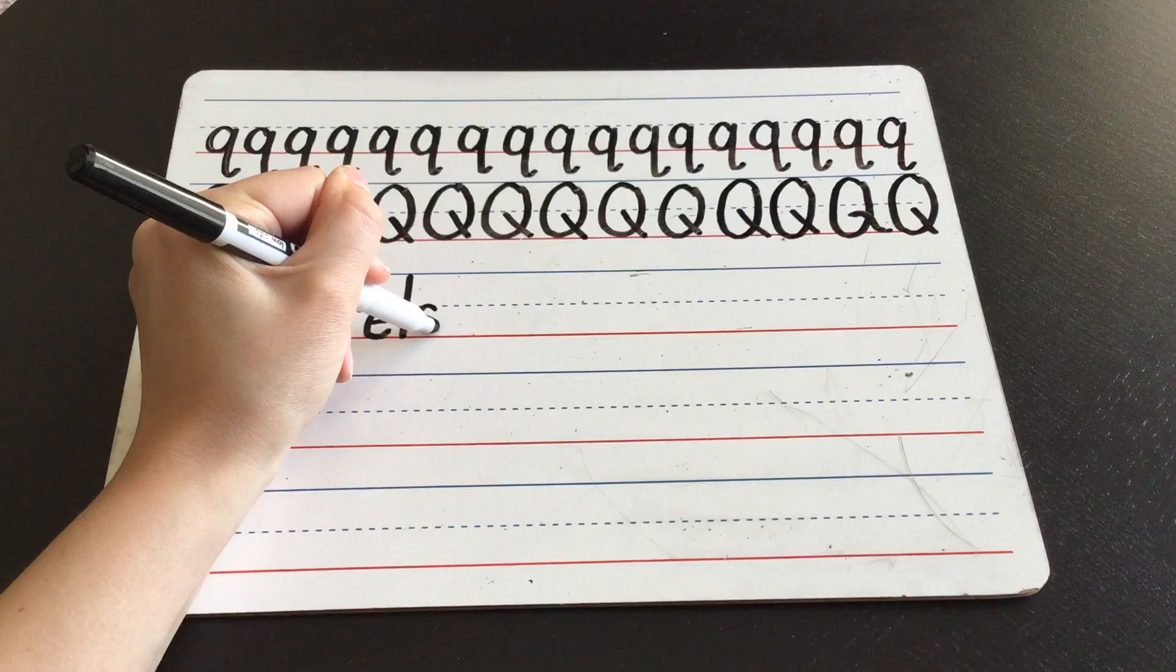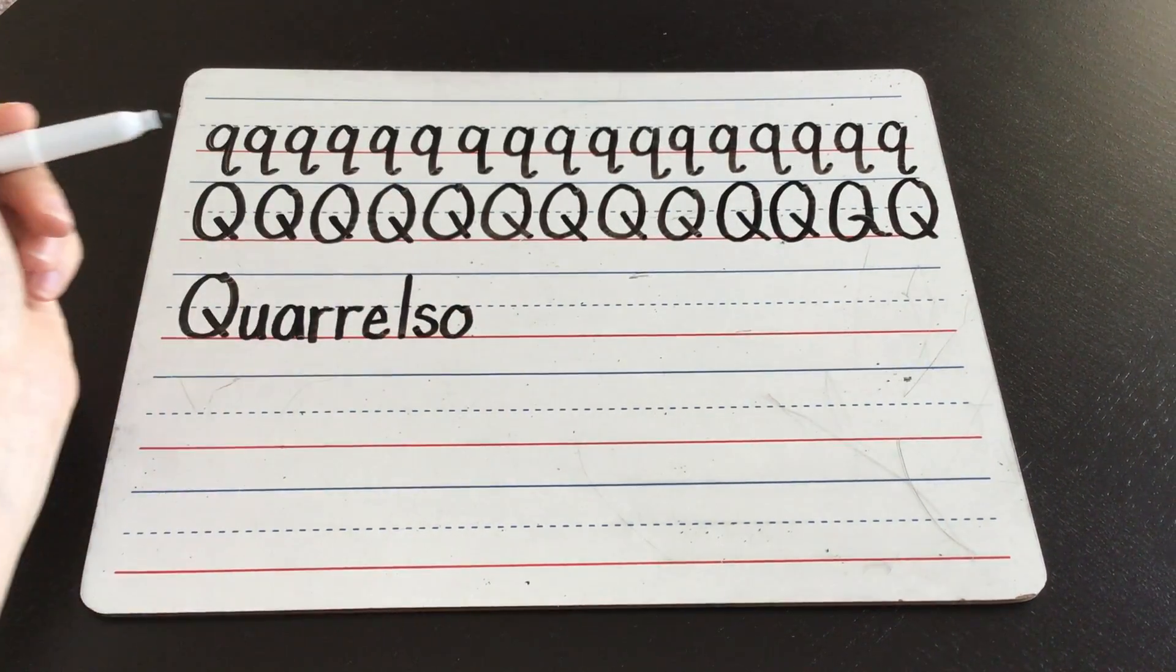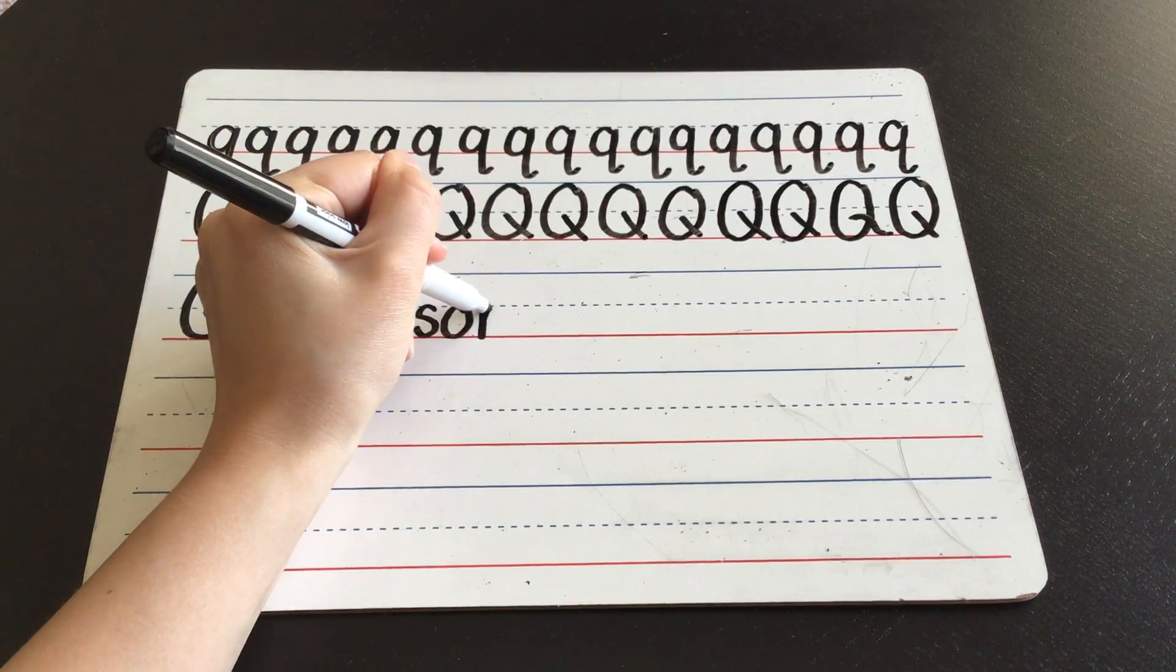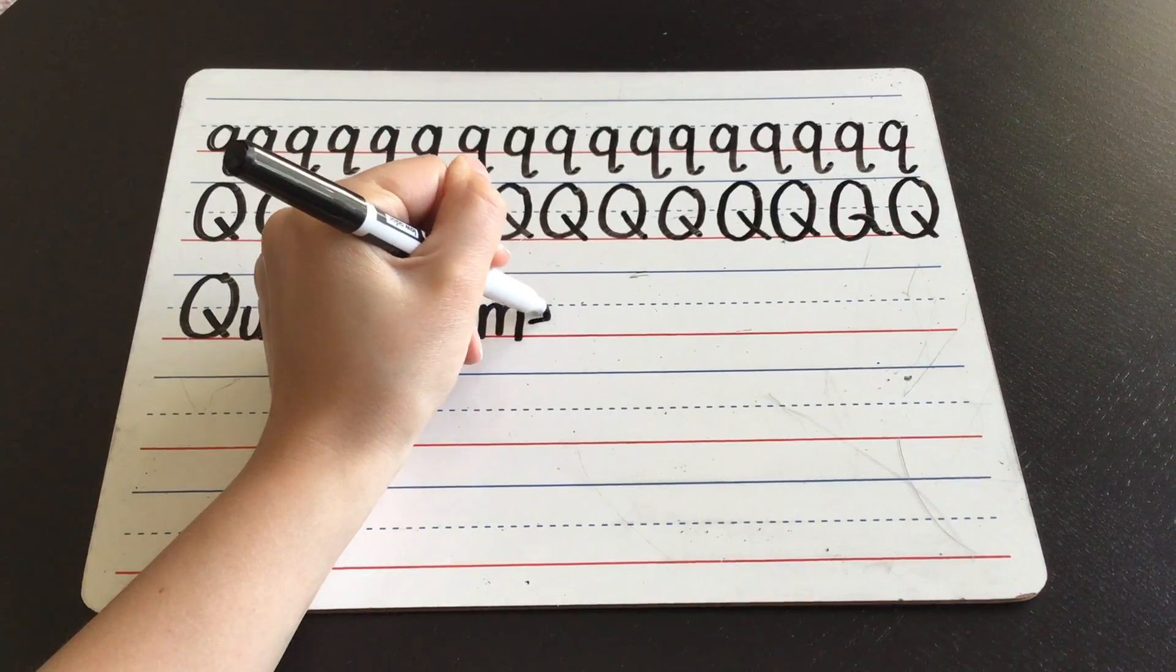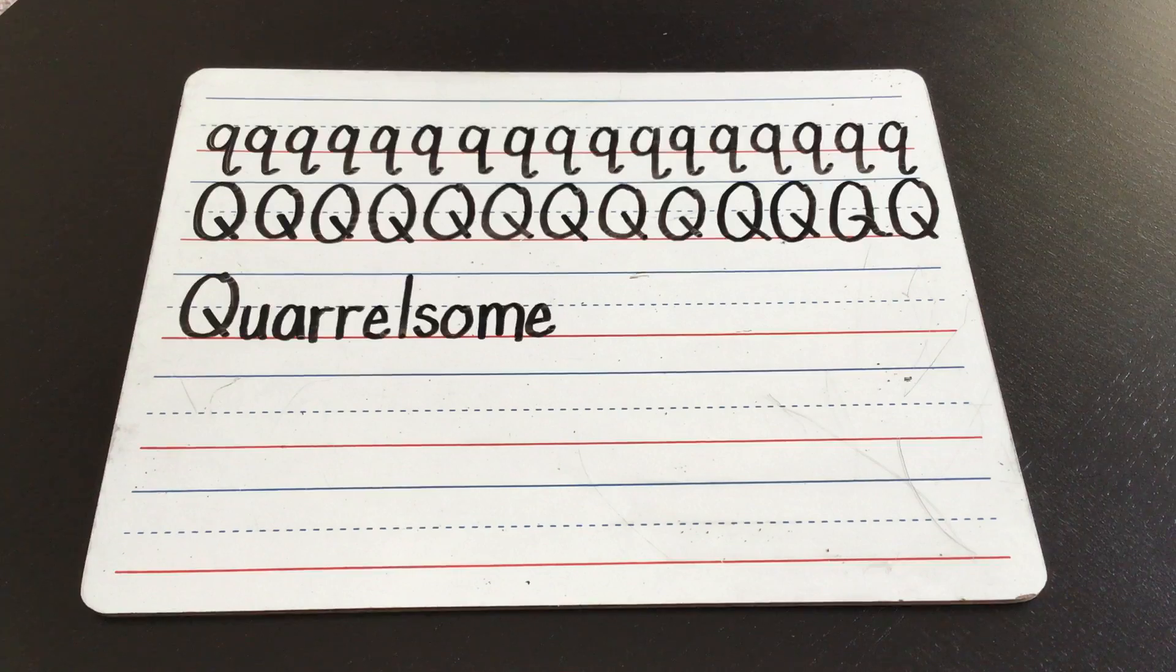Ss, bothersome brother. It sounds like a U, but it's a bothersome brother. Ss, um, um, munching mic, and then a silent E at the end, just to make it a little bit longer. Quarrelsome,